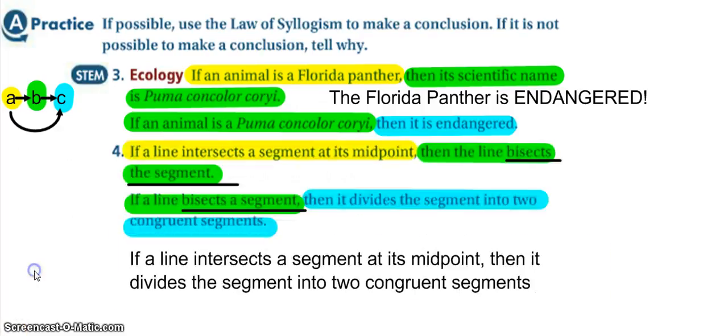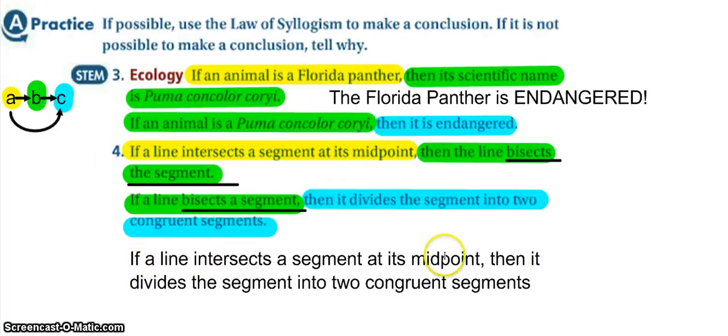Our final conclusion for number four using the law of syllogism is: if a line intersects a segment at its midpoint, then it divides the segment into two congruent segments.